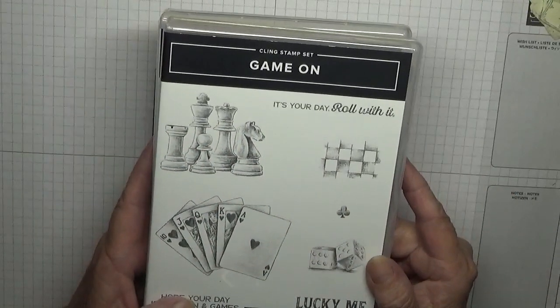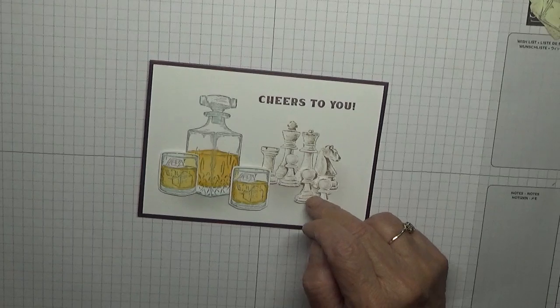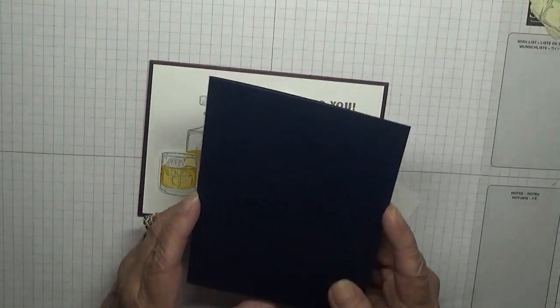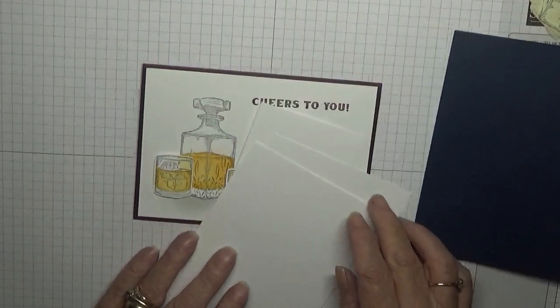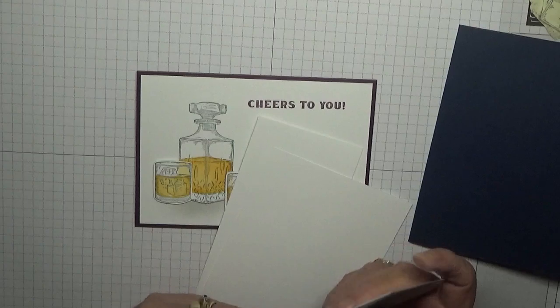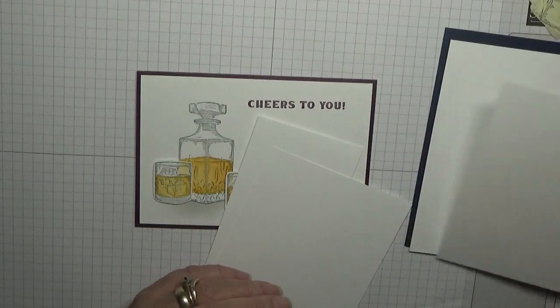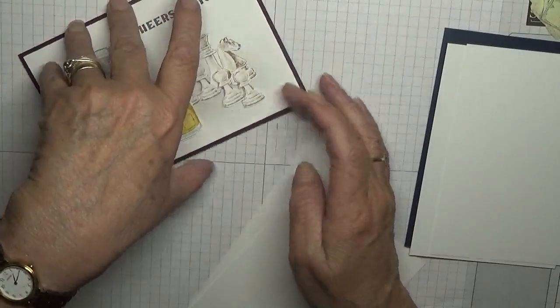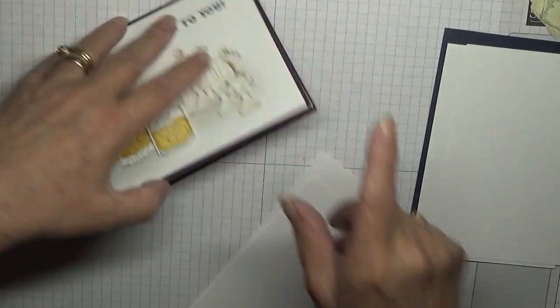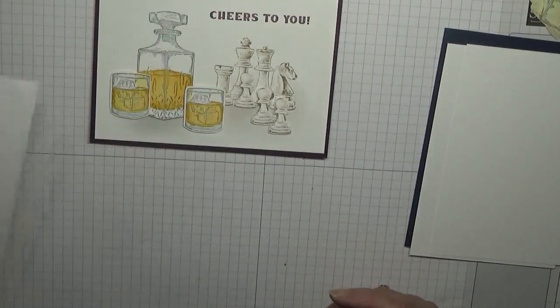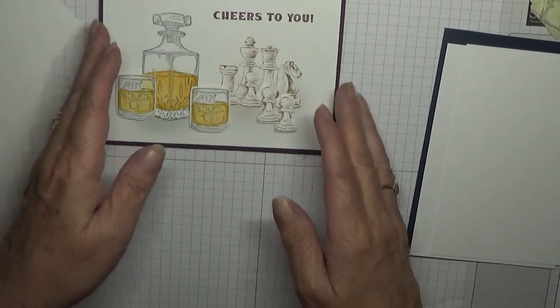The cardstock I'm using: I have a Night of Navy card base of 8 1/4 by 5 7/8 scored at 4 1/8 and burnished. I have two pieces of white cardstock at 5 5/8 by 3 7/8, one for the inside and one for the top, and I've got some scraps of white.